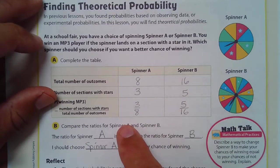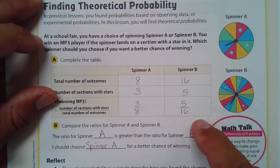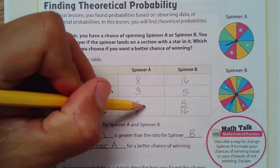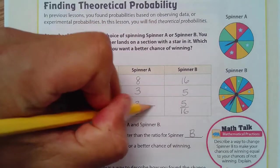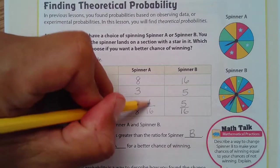So what's the probability? Well, it's 3 out of 8 for this one and 5 out of 16 for this one. So we compare the ratios of spinner A to spinner B. And what I could do is I could really just double this. If I double that, then I have to double 3, which is 6.